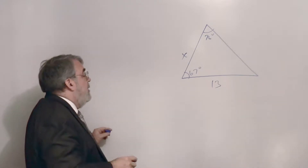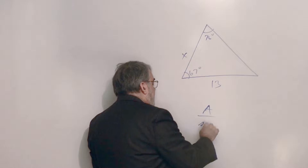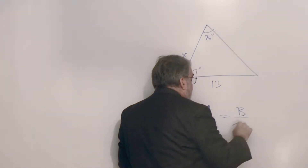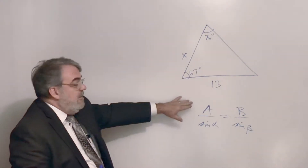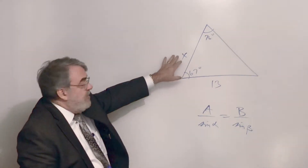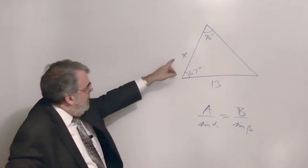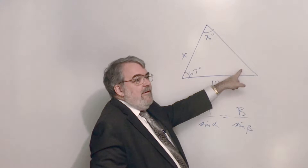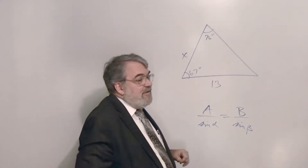Remember the Law of Sines: a over sine alpha equals b over sine beta. I put the length on top because I'm solving for length. In order to fill it out, x would have to be opposite a known angle — and at the moment, that angle is not known.